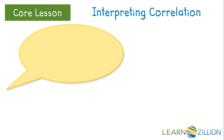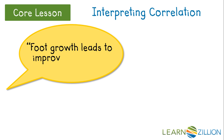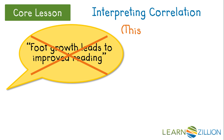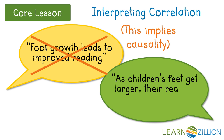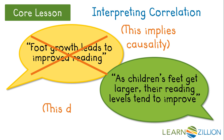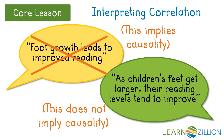In our reading example, can we say that foot growth leads to improvements in reading? Obviously not — here it's clear that we have implied causation. Can we say that as children's feet get larger, their reading scores tend to improve? Yes, this careful wording does not imply that a change in one variable is causing the change in the other, only that the two variables are moving together.